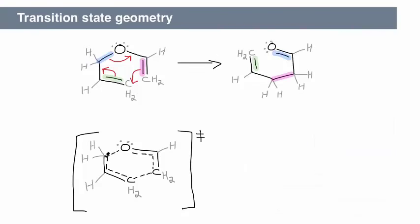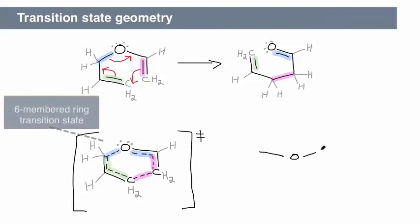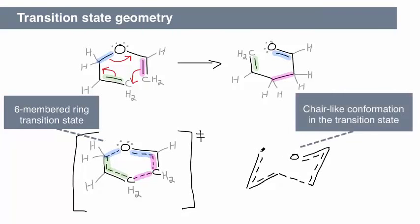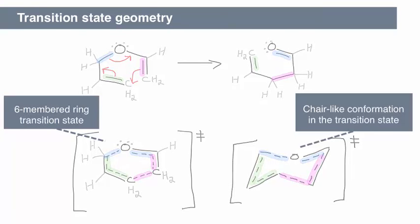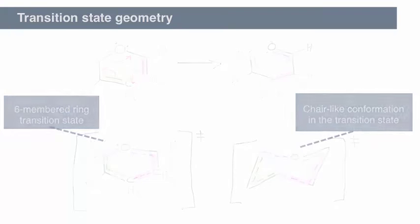The geometry, or conformation, of the transition state is also very important. For example, six-membered ring transition states often have chair conformations. Because there are so many different variables to consider, the geometry is something you will study in your courses as you learn about each reaction. So that's it!